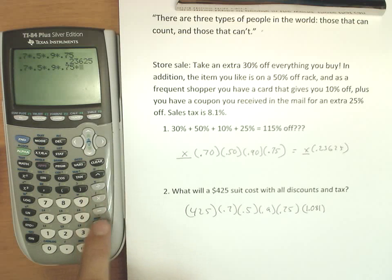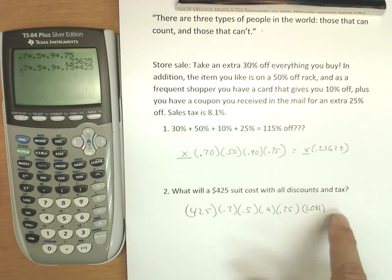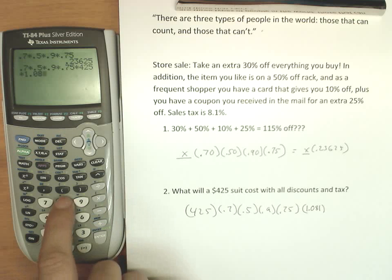And I can multiply it times the price of the suit. It won't matter that my $425 in the calculator is at another position—multiplication is commutative. And I can multiply times 1.081.